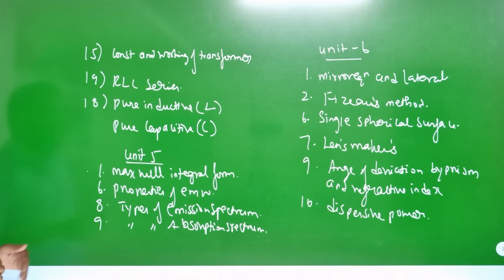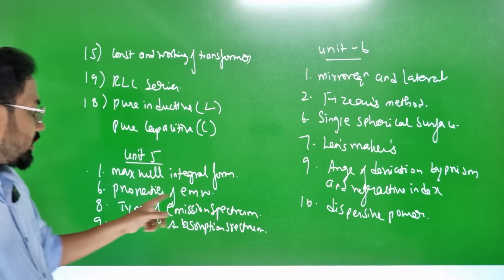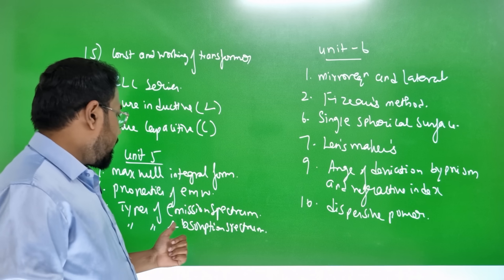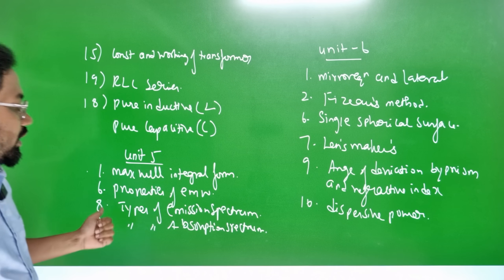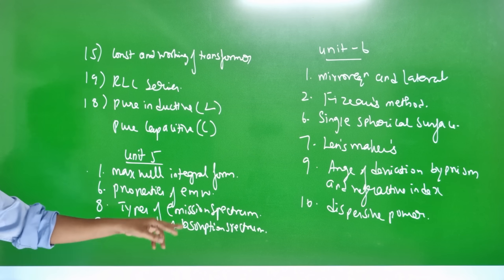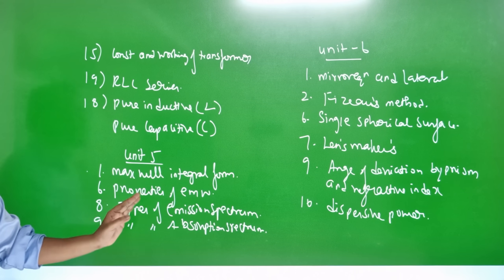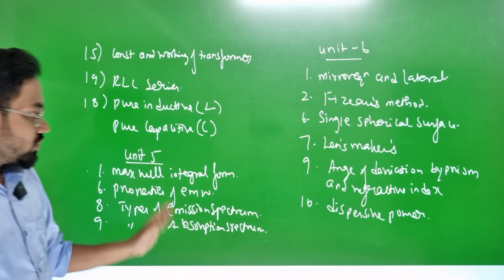Unit 5: Maxwell integral form, properties of electromagnetic waves, types of emission spectra, and absorption spectra — these are easy topics.